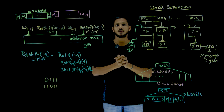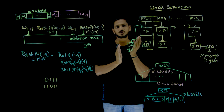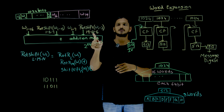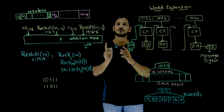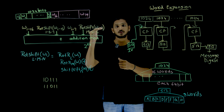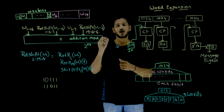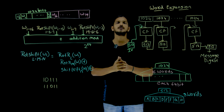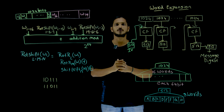Similarly, σ1(wi-2) uses w14 (16-2=14): circular right rotate 19 times, XOR with circular right rotate 61 times, XOR with left shift 6 times. The result is sent into the addition modulo 2^64.